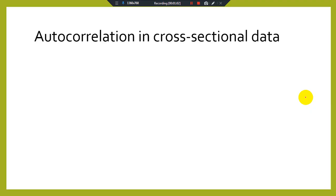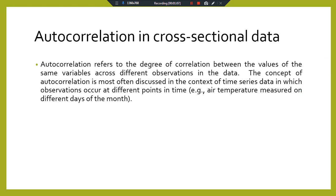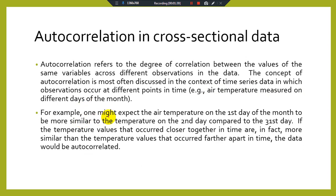Autocorrelation refers to the degree of correlation between the values of the same variable across different observations in the data, or across different time periods. The concept of autocorrelation is most often discussed in the context of time series data, in which observations occur at different points in time — for example, air temperature measured on different days of the month.